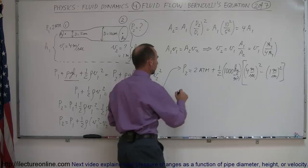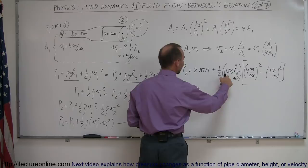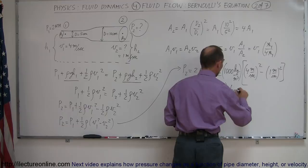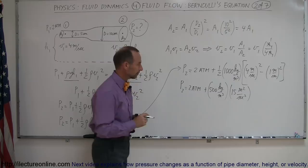So it would be 16 minus 1 or 15. So we have P2 is equal to 2 atmospheres. 1 half of 1,000, that would be plus 500 kilograms meters cubed, and multiply that times 16 minus 1 or 15. That would be meters squared per second squared.